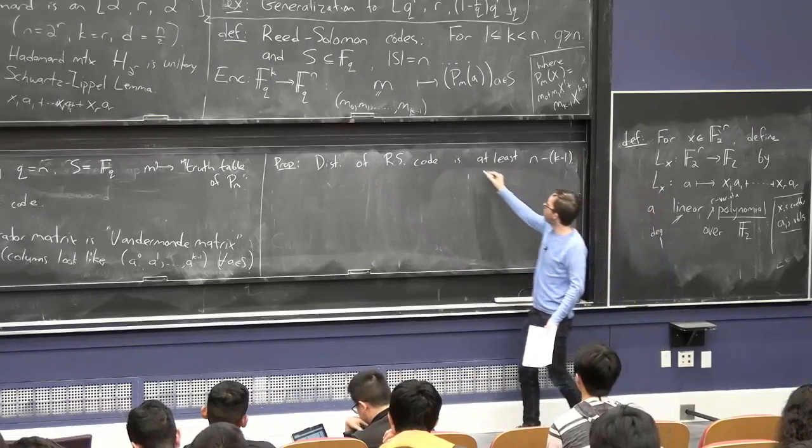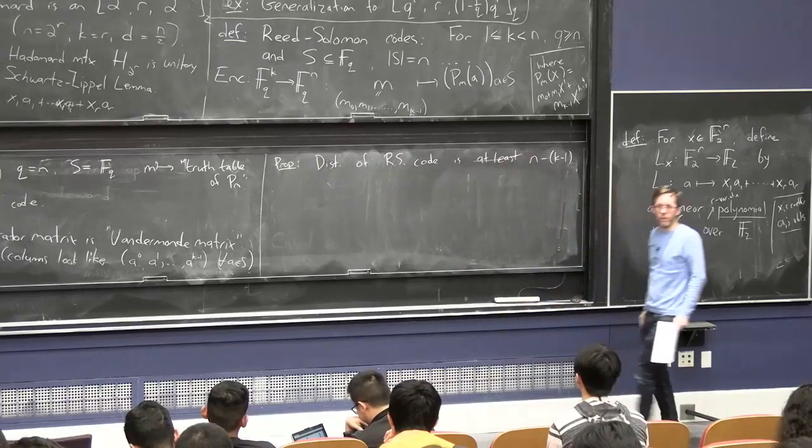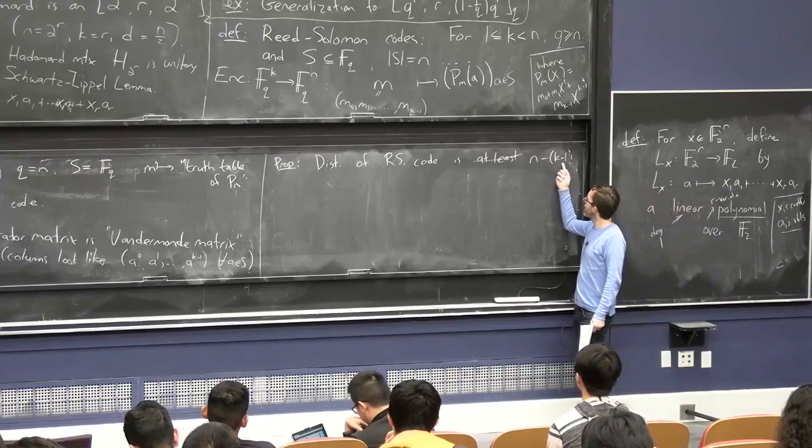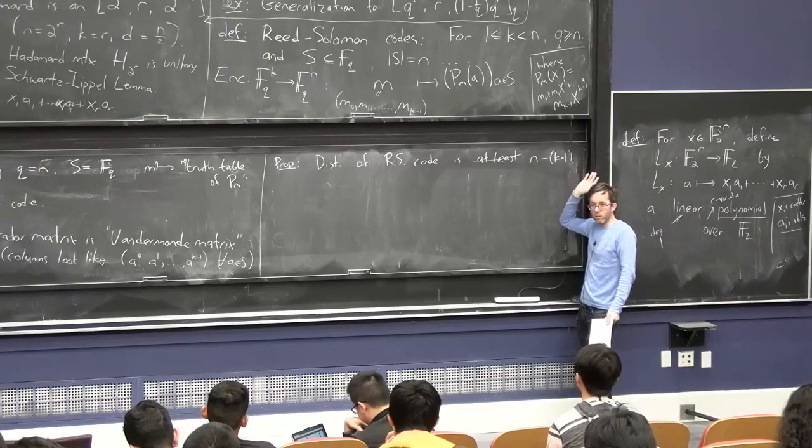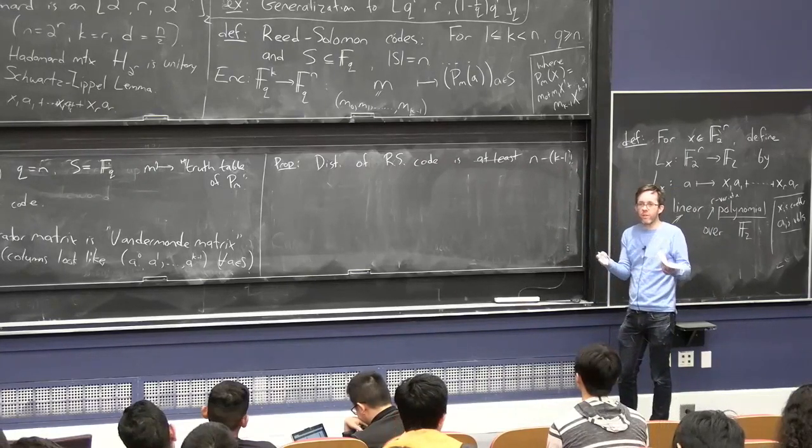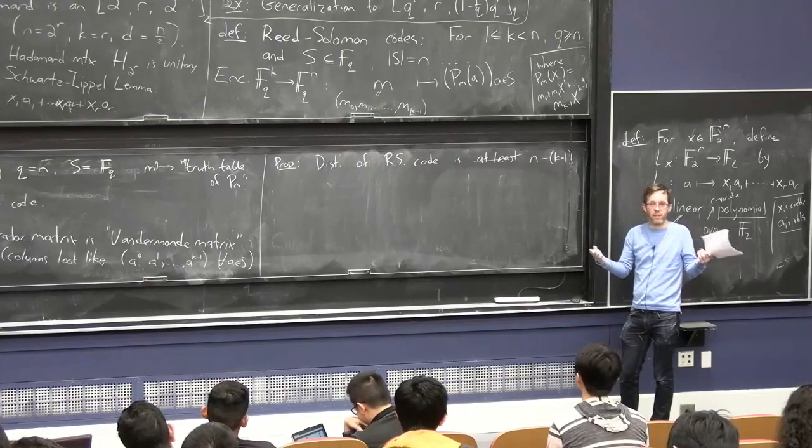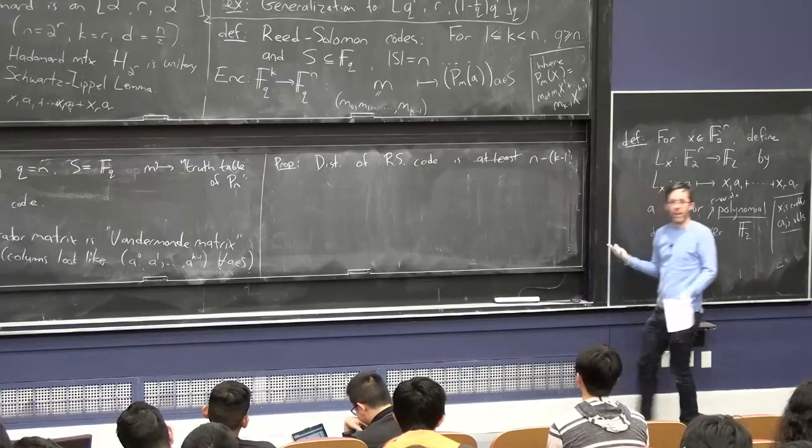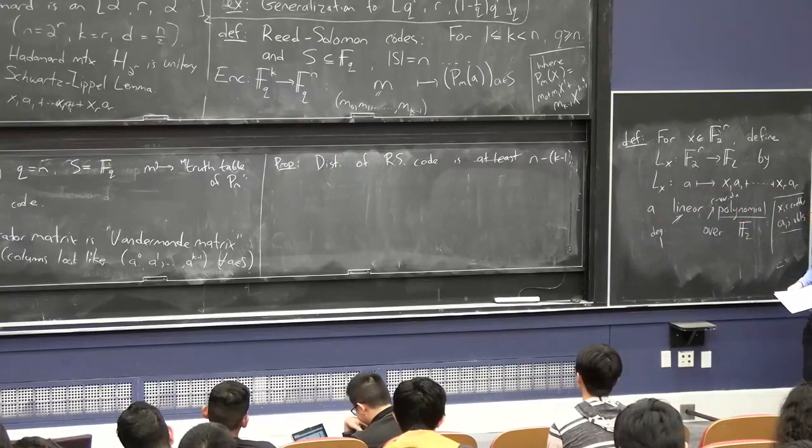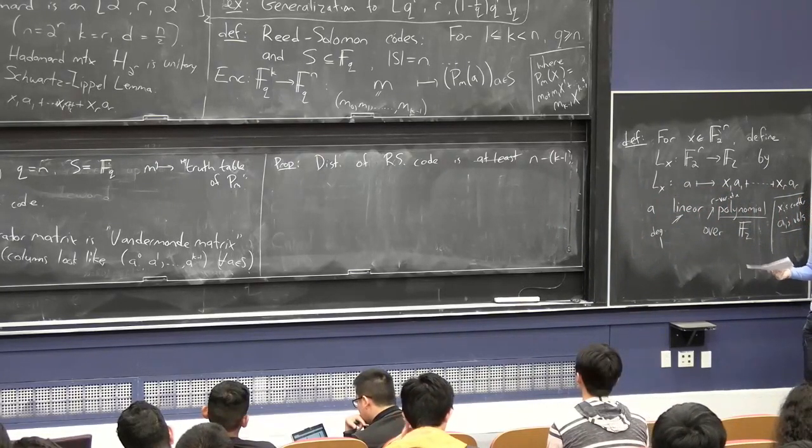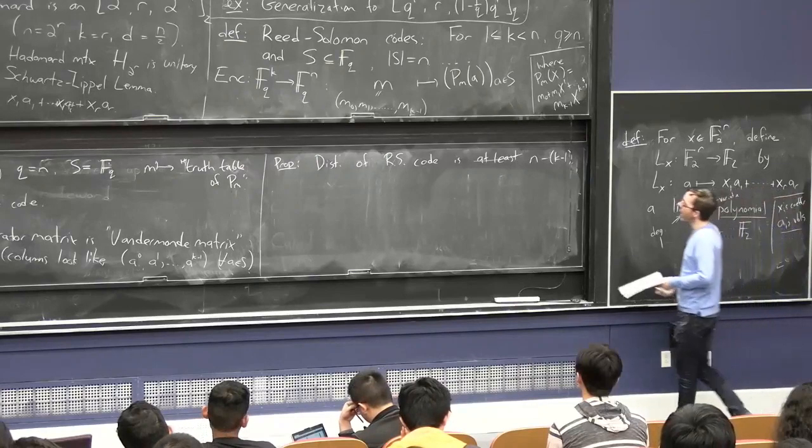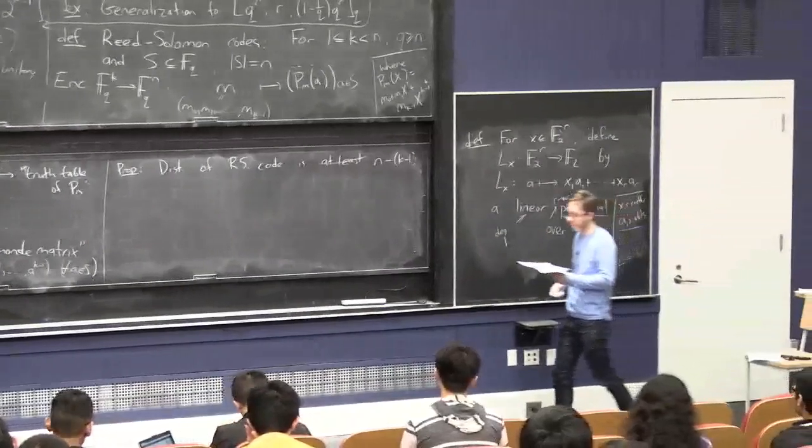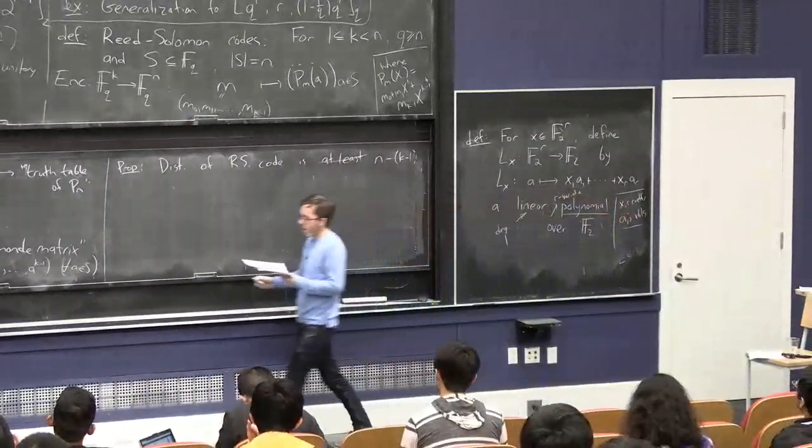In fact, we won't prove this, but it's exactly equal to this. That's really great because, if k is n over 2, let's say, so you're mapping vectors of length n over 2 to vectors of length n, that's excellent rate. And then the minimum distance will also be like n over 2, which is like an excellent minimum distance. You can correct like n over 4 errors, for example. The only downside is n has to be smaller than the alphabet size. So the alphabet size has to be really big.